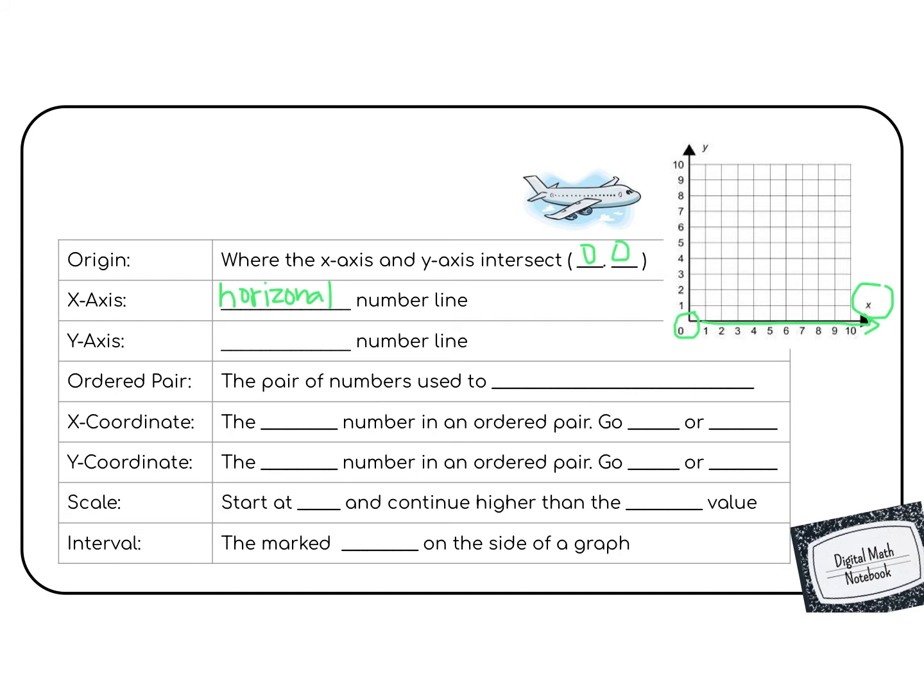Which means that the y-axis is a vertical number line. It goes up and down. An ordered pair is a point where we use to locate a specific point on a grid. So in the example, we used 3, 4. So we would go over 1, 2, 3, and then up 1, 2, 3, 4. So it is a pair of numbers used to locate a point.